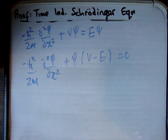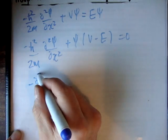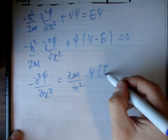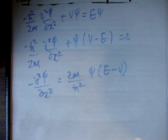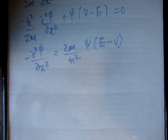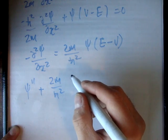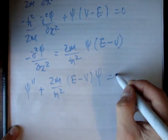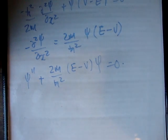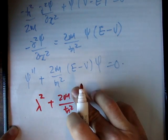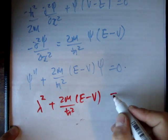After rearranging and a small bit of factorization, we get psi double prime plus 2m over h-bar squared times (E minus V) times psi equals zero. To solve this second-order differential equation with constant coefficients, we need to solve the characteristic equation: lambda squared plus 2m over h-bar squared times (E minus V) equals zero.